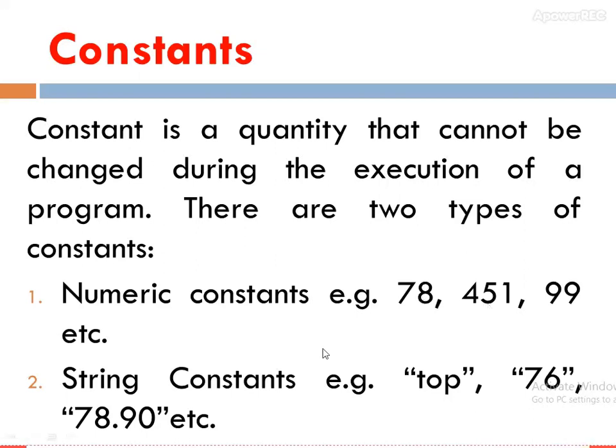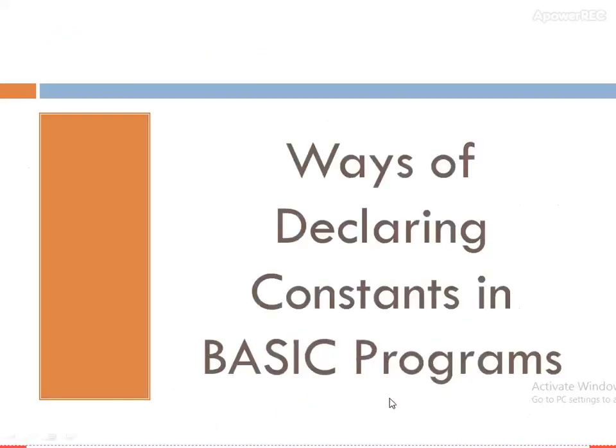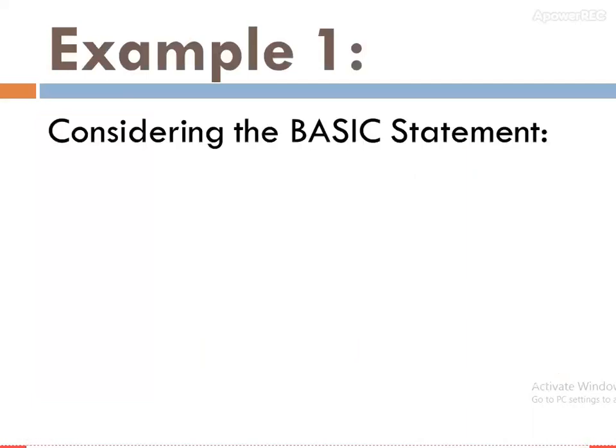As you can see, the examples are given here. These are examples of string constants. Now let's look at ways of declaring constants in BASIC programs. Example one: when we consider a BASIC statement like this having LET B = 78, this means that during the execution of the program, the value 78 will be stored in the location B, and whenever B is being referenced, the value 78 will be presented.